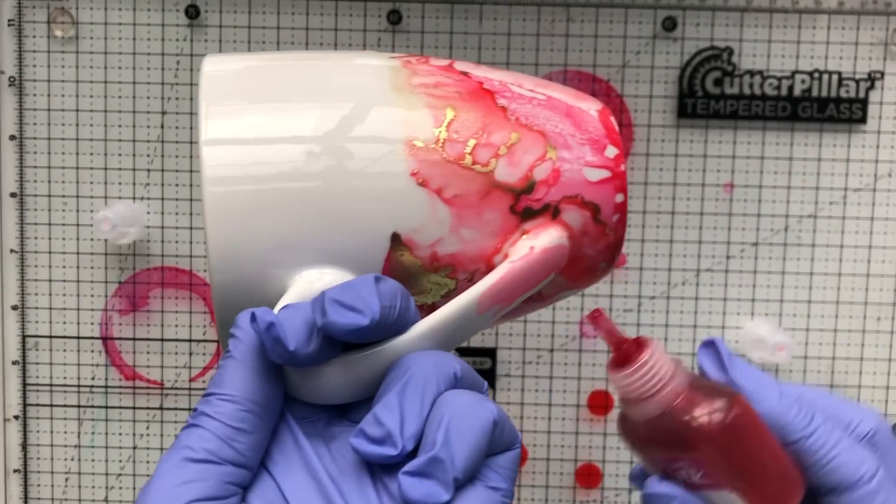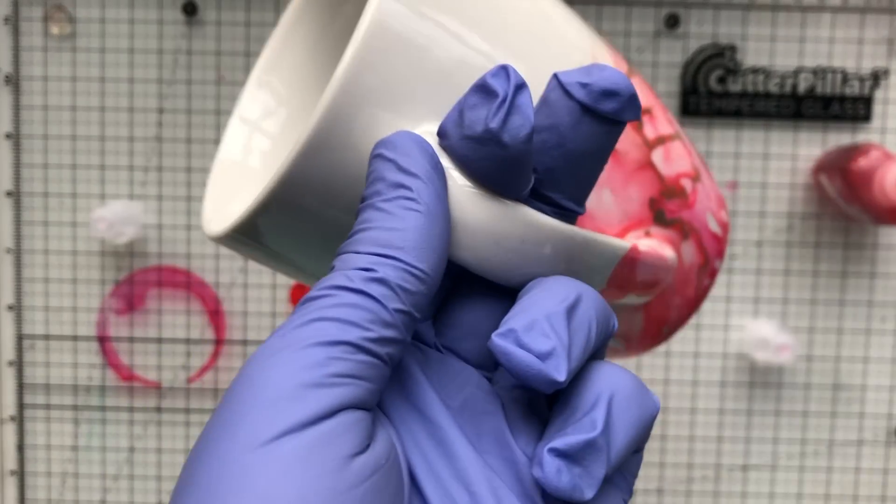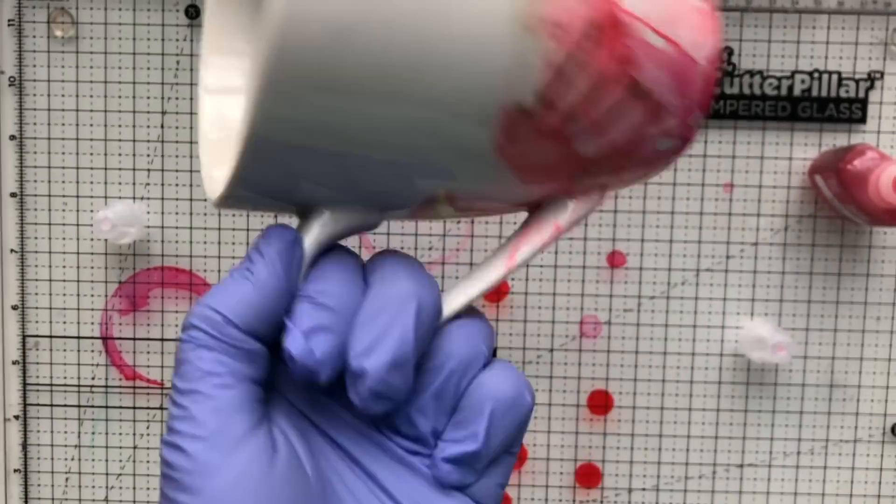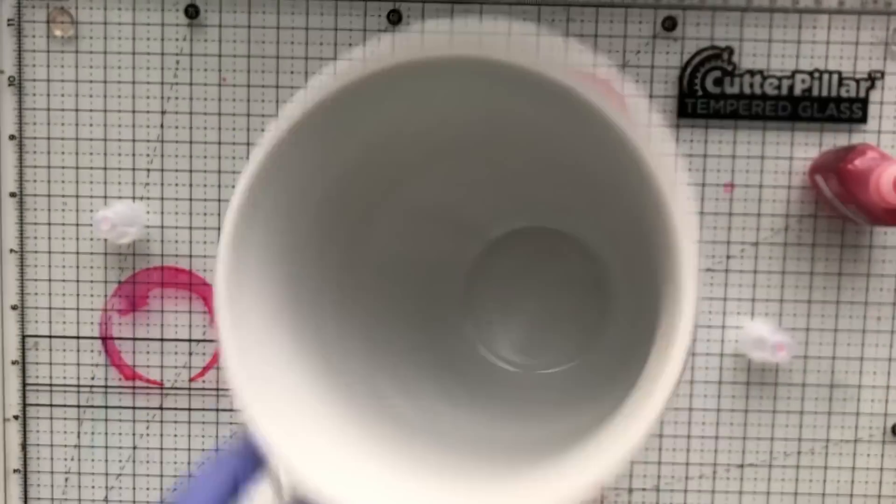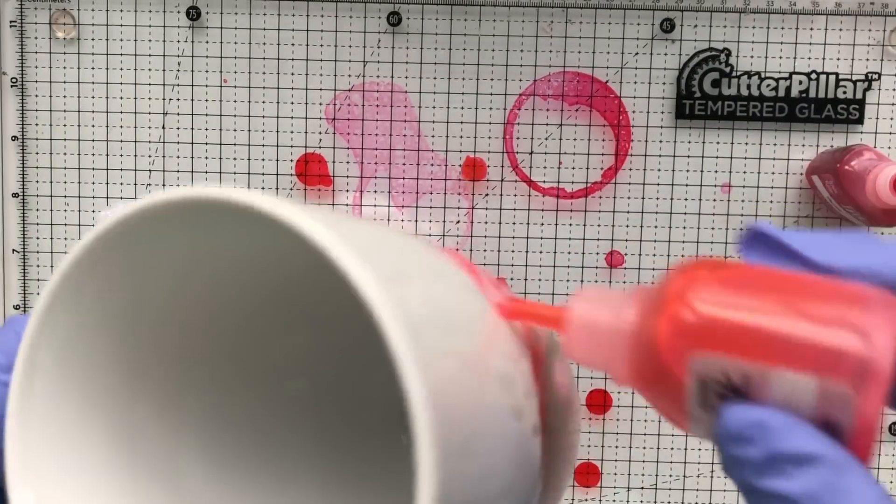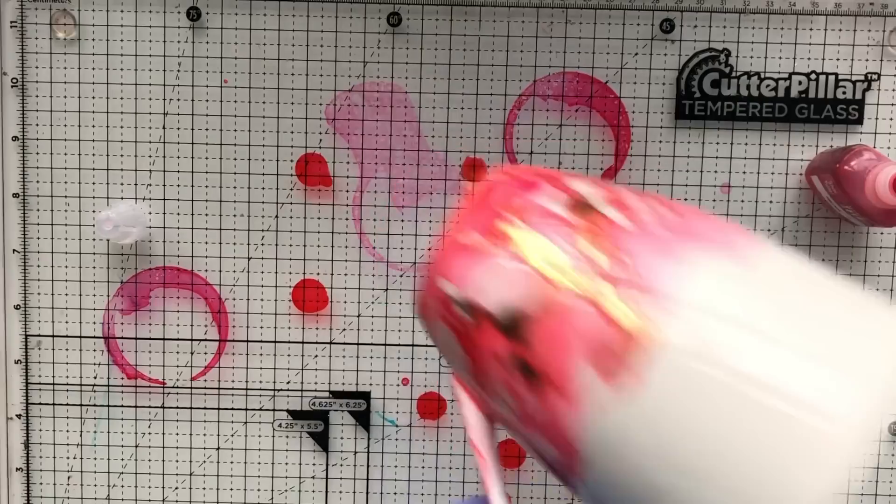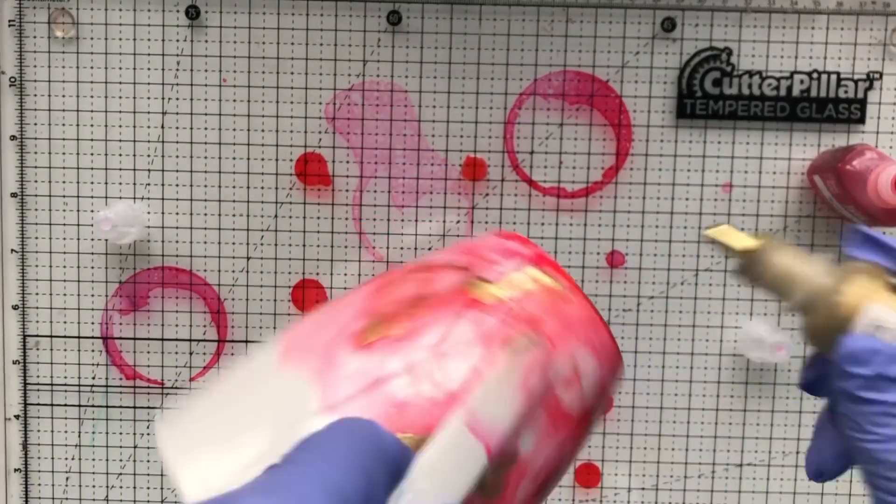When you're using alcohol inks you need to be in a well-ventilated area, so I have windows open all around me. I'm also wearing some gloves here that I got off of Amazon because I don't want this stuff all over my hands. As you can see, I'm going in and just playing around until I get a look that I want.